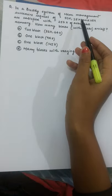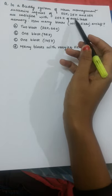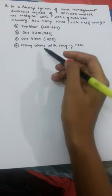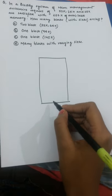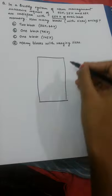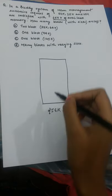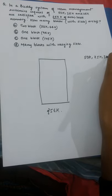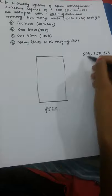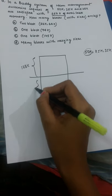Now we will solve a question based on the buddy system. In the buddy system of memory management, successive requests of 50K, 25K, and 35K are satisfied with 256K of available memory. How many block sizes are left? We start with 256K as a single contiguous block. For the 50K request, 50K is much less than 256K, so we divide into 128K and 128K.